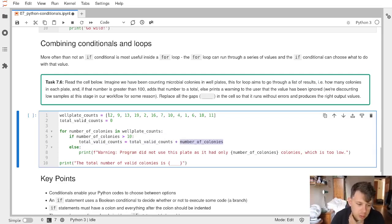If we think about this mentally, when we go to the first round, the first number of colonies will be 12. That will be greater than 10, so we'll add that, and the total valid counts will become 12. The second round, 9 is less than 10, so nothing will happen. The third round, 13 is greater than 10, so we'll add 13 to 12 to get 25. The fourth round, 19 is greater than 10, so we'll add 19 to 25, which is 44.